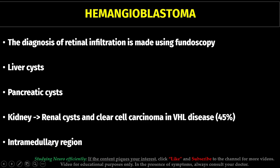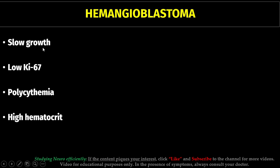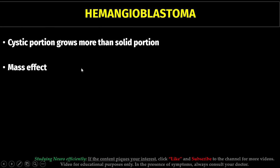We generally use MRI and CT scan for investigation. Hemangioblastoma is a slow-growing tumor and presents a low Ki-67 index. On the hemogram, it tends to show polycythemia and high hematocrit. The cystic portion of the hemangioblastoma grows more than the solid portion, and this growth can cause hydrocephalus and mass effect, requiring a shunt.